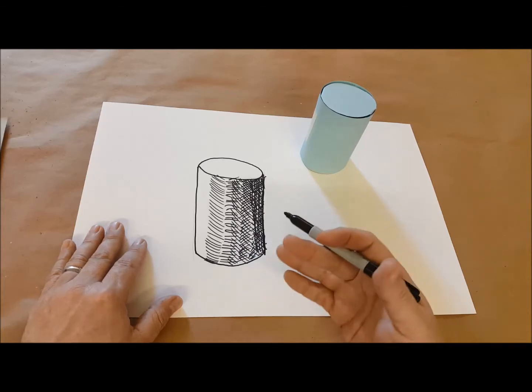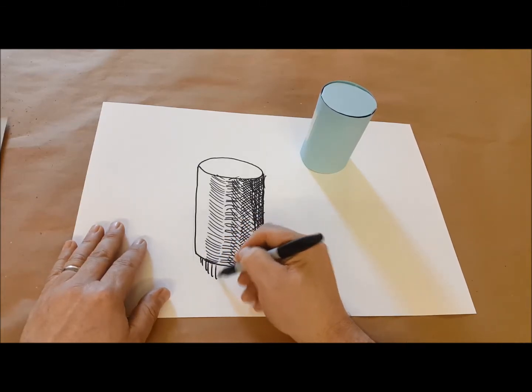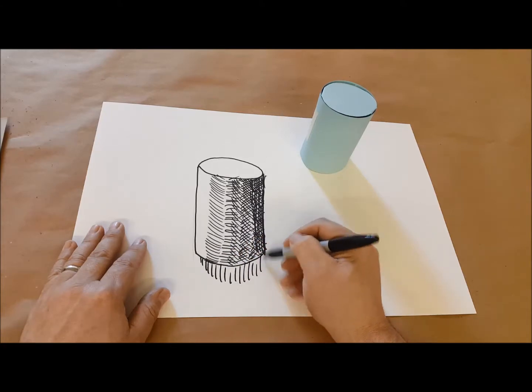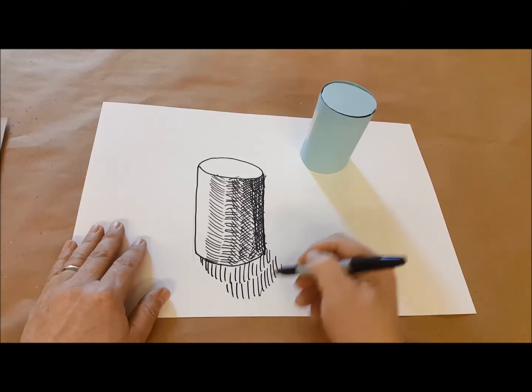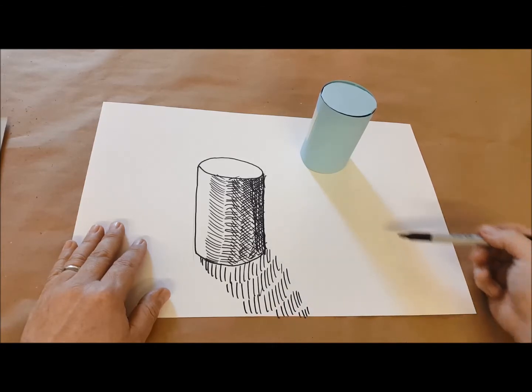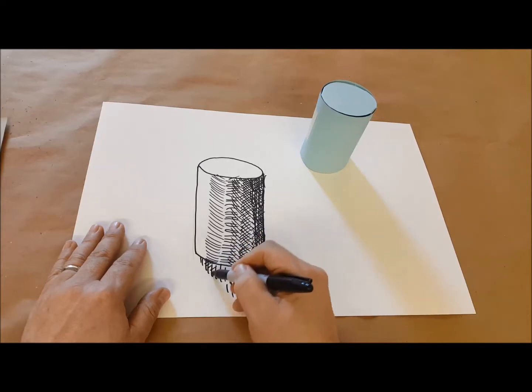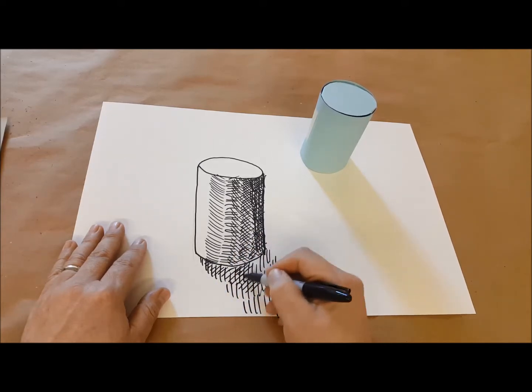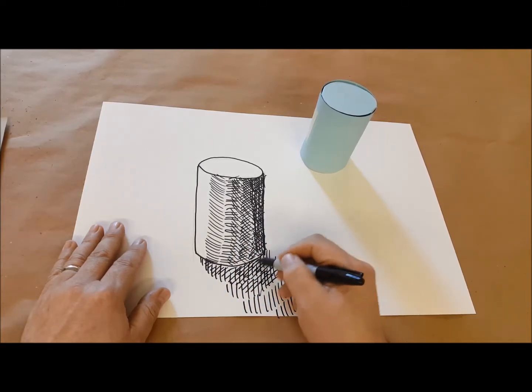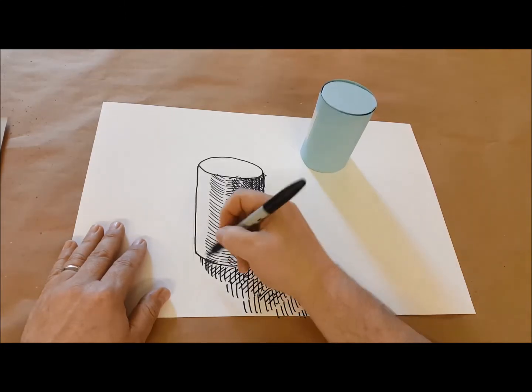Now you can see the cylinder starts to look three-dimensional. If I want to play with the idea of shadow on the ground, the same idea holds true. And the shadow tends to get darker as it goes near the object, and then even darker still as it goes underneath.